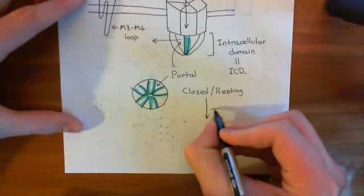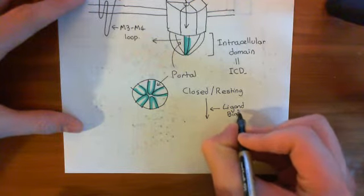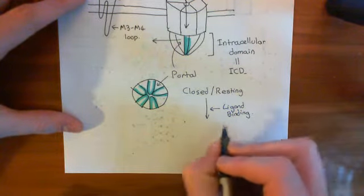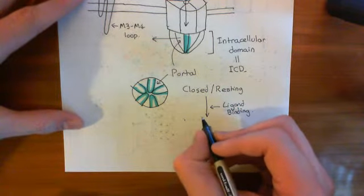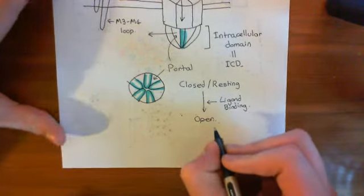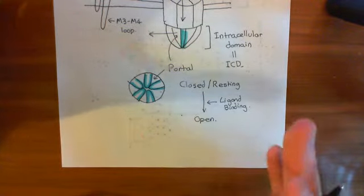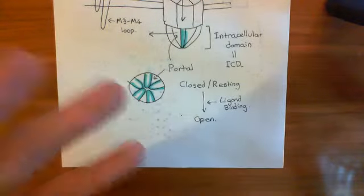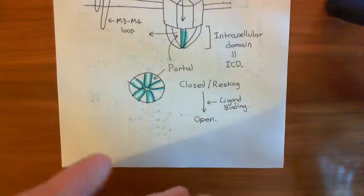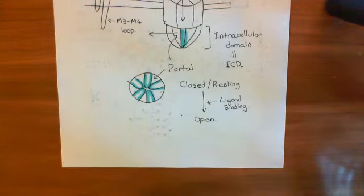When ligand binds to the closed channel, the receptor opens — it goes into the open state. The M2 alpha helices all move outwards, and that means the circle of leucine residues, the circle of threonine residues, and the circle of proline residues all move outwards, and then chloride ions will be able to move in.